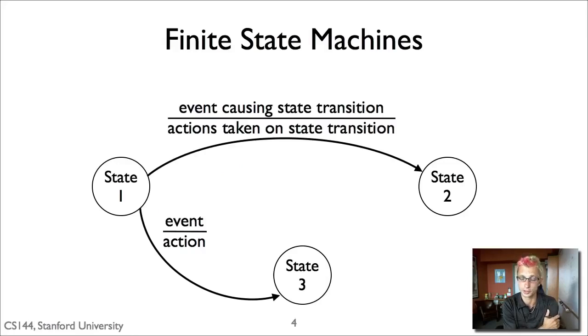So just a refresher on finite state machine diagrams. When we draw a finite state machine of a protocol, we show the states that it can enter: state one, state two, state three. And then edges between the states have two pieces of information. First, the event that can cause a state transition on top, and then below, the action the protocol takes on making that state transition.